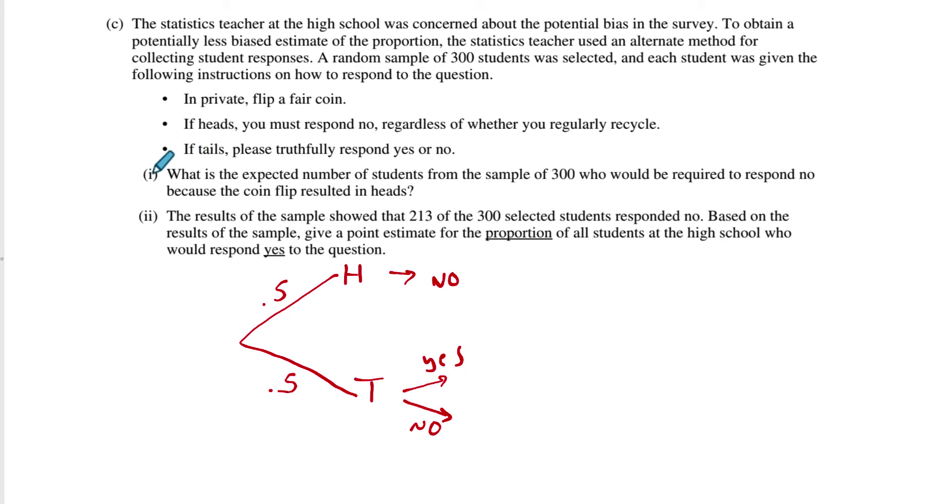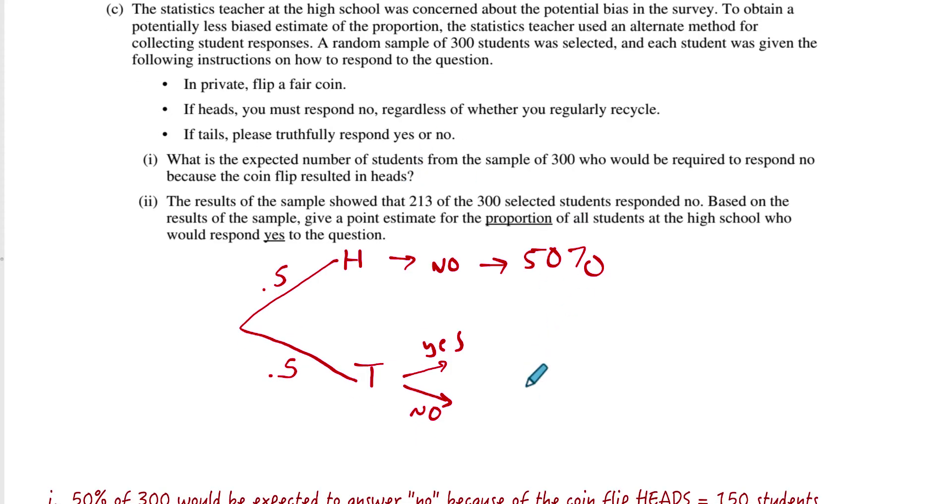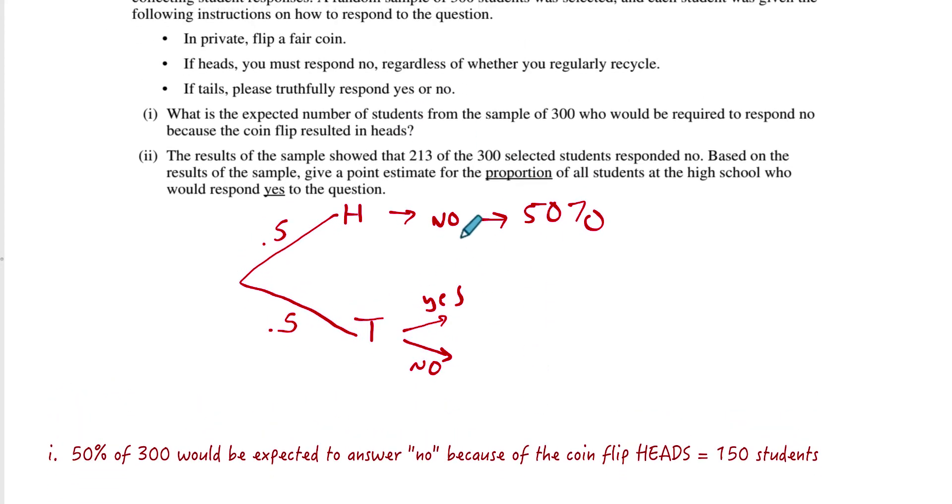Okay, so the first question, part one, says, what is the expected number from the sample? We know that it's going to be 50%, right? So it's 50% of 300, right? I mean, the total number is 300. So half of that should have to say no because of the heads. So 50% of 300 would be expected to answer no because of the coin flip heads. That is about 150 students. Boom. Easy.